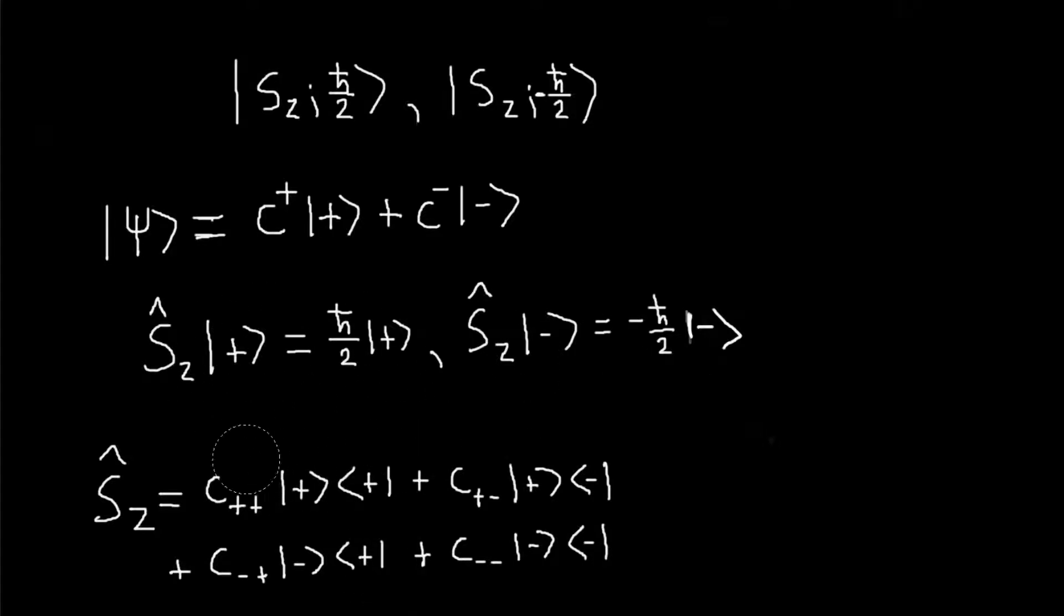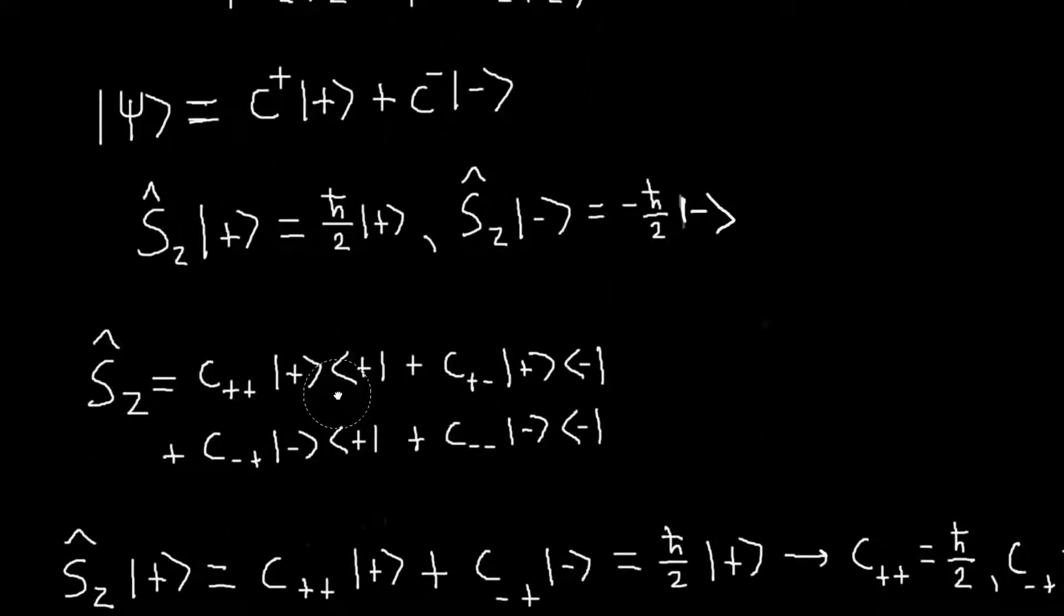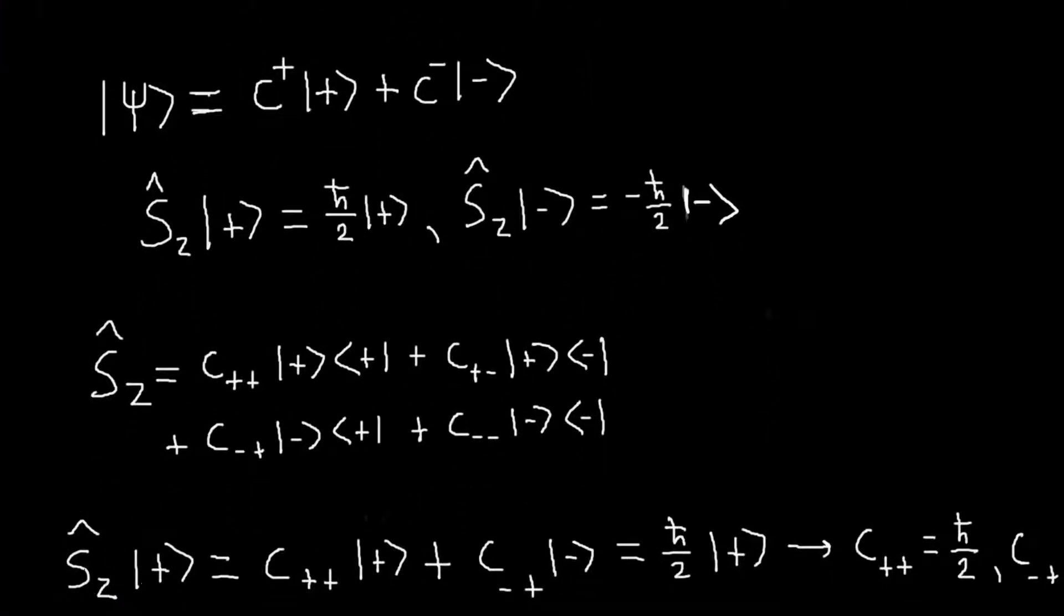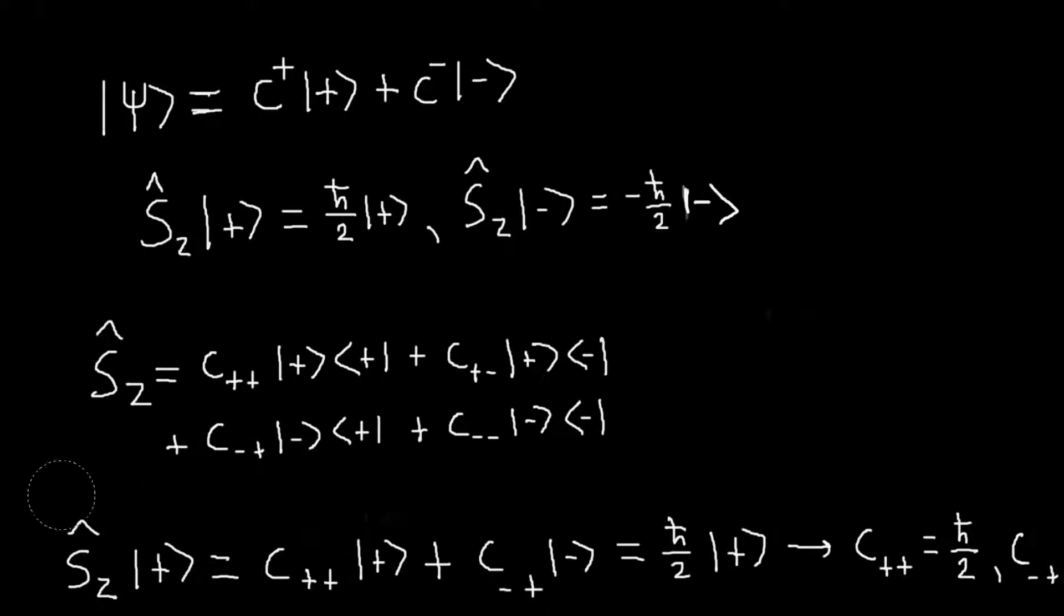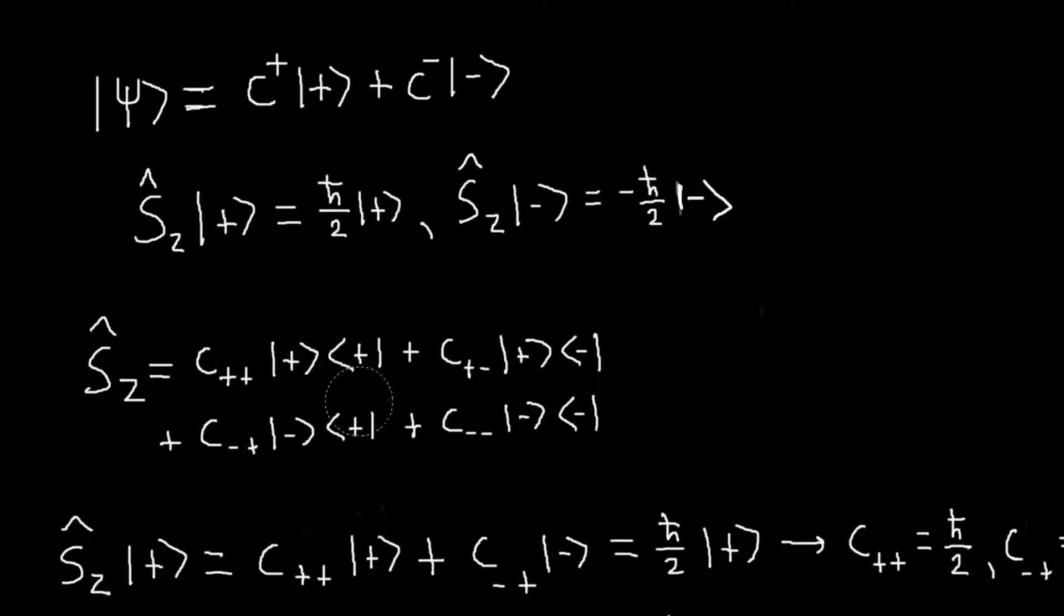So for example, if I take Sz, this expression, and I apply it to my plus ket, what will happen? So I don't think I've talked about how you multiply outer products onto kets, but it's very easy. You just take the bra on the right, and you form the inner product with the ket. And that'll just be a number, and then you'll just be left with a ket.